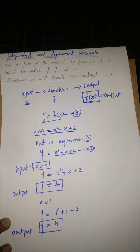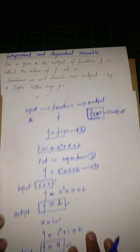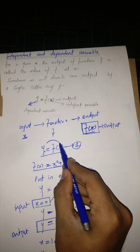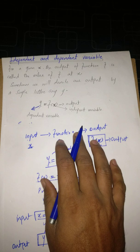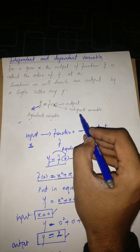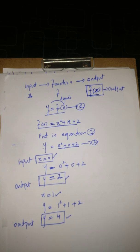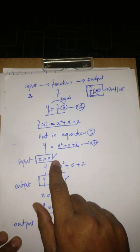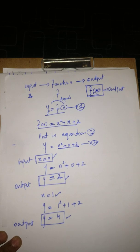We see that the value of Y depends on X. When we change X, our Y also changes. So Y is the dependent variable because its value depends on X. X is the independent variable because we can take any value of X freely, and it gives us a specific value of Y. In simple words, our output depends on our input.